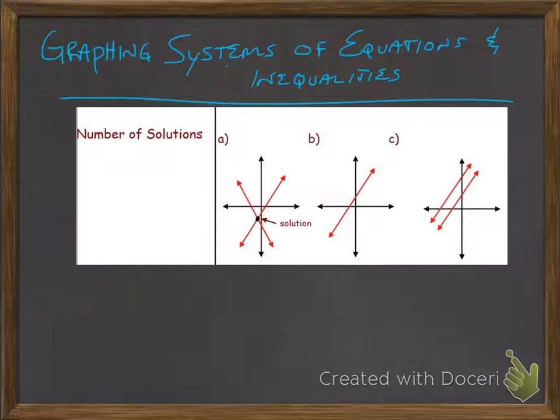So we're going to be graphing systems of linear equations where it's two linear equations or two lines on one coordinate plane. And when you do this, there's a possibility of three different types of solutions.